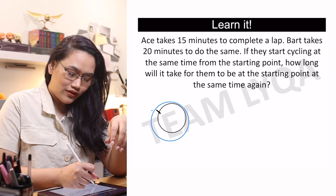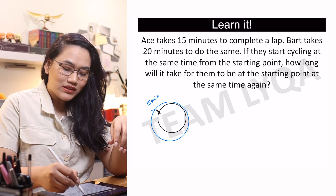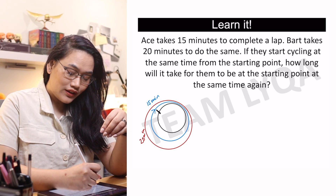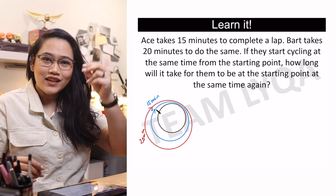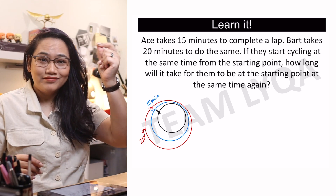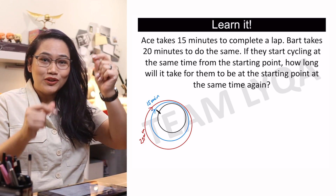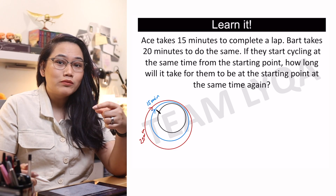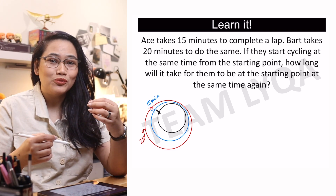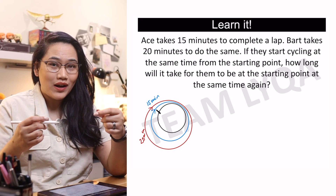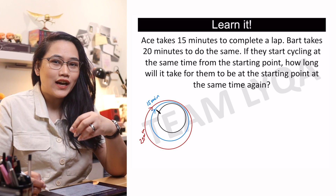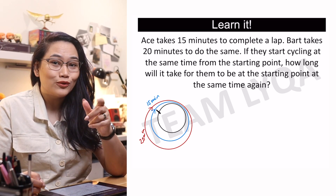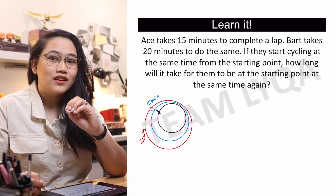For example, Ace goes around every 15 minutes and Bart goes around from the starting point every 20 minutes. What you want to know is when they will meet right here at the starting point. They will be together when they finish at the same time. Because Ace is 5 minutes faster, with each lap he gains an extra 5 minutes. To find when they meet at the starting line at the same time again — even though Ace has done more laps because he's faster — we are going to look for the least common multiple.